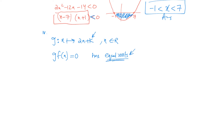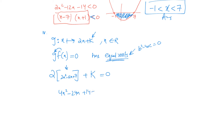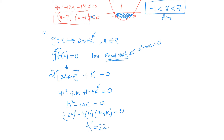For equal roots, the discriminant must equal 0. Forming g(f(x)): function g is 2x plus k, so replace x with f(x) = 2x² minus 12x plus 7, giving 2(2x² minus 12x plus 7) plus k equals 0, which simplifies to 4x² minus 24x plus 14 plus k equals 0. Applying b² minus 4ac equals 0, the value of k works out to be 22.